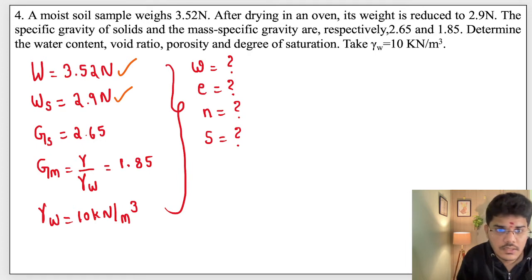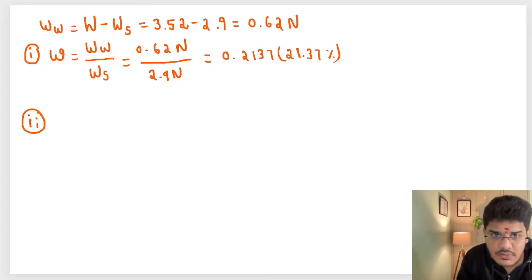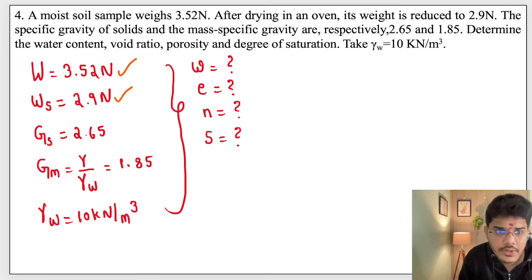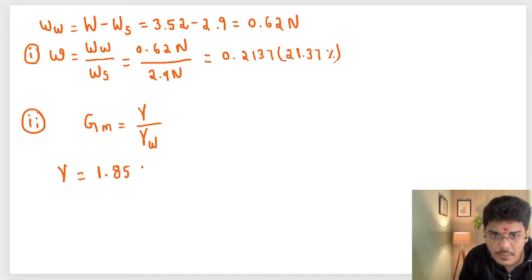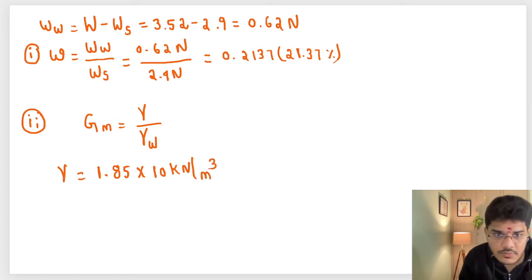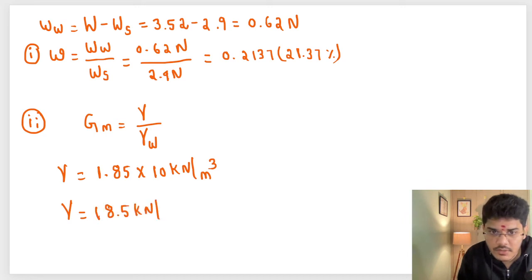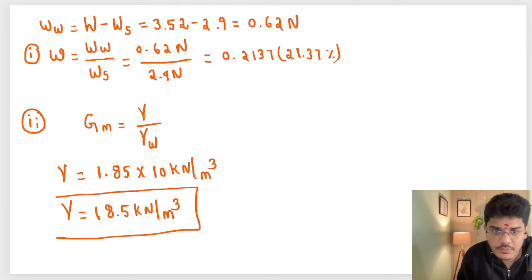Before calculating the void ratio, one more parameter — mass specific gravity — is given. Mass specific gravity Gm equals gamma divided by gamma-w. So gamma equals Gm times gamma-w, which is 1.85 into 10, giving gamma equal to 18.5 kilonewtons per meter cube.